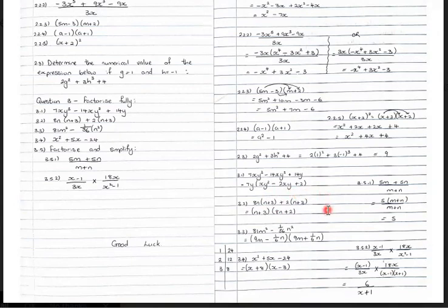Question 3.2: you have 8n(n plus 3) plus 2(n plus 3). Notice that n plus 3 is common in both terms, so pull it out as the highest common factor. You get (n plus 3) open brackets, then write what remains: 8n plus 2, close brackets.